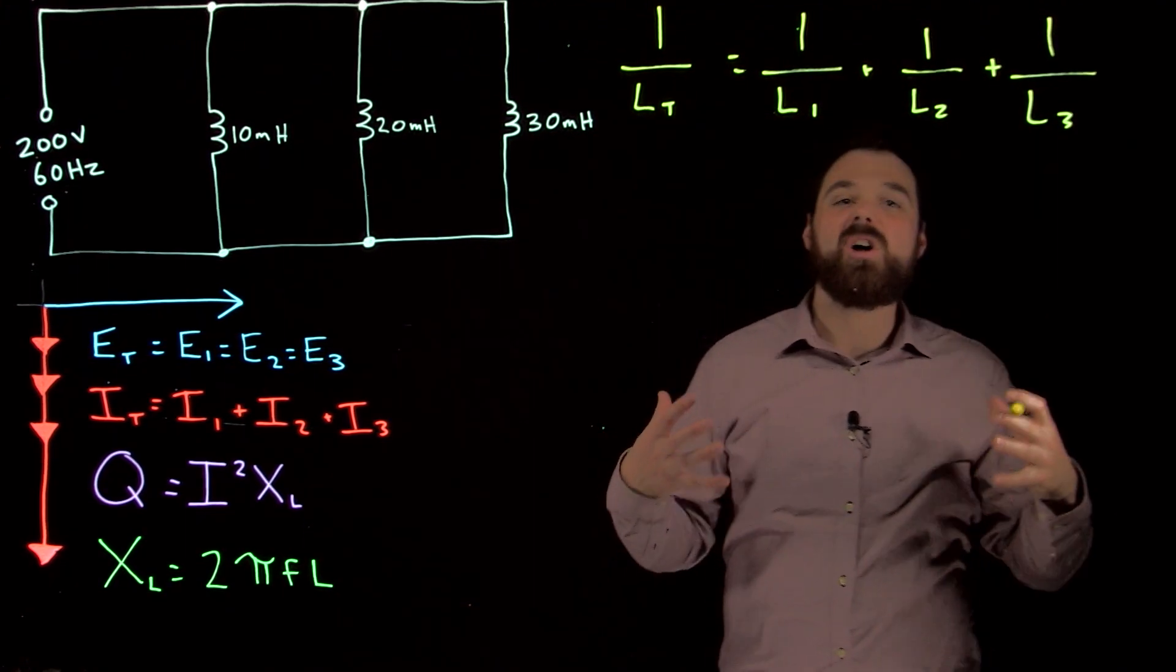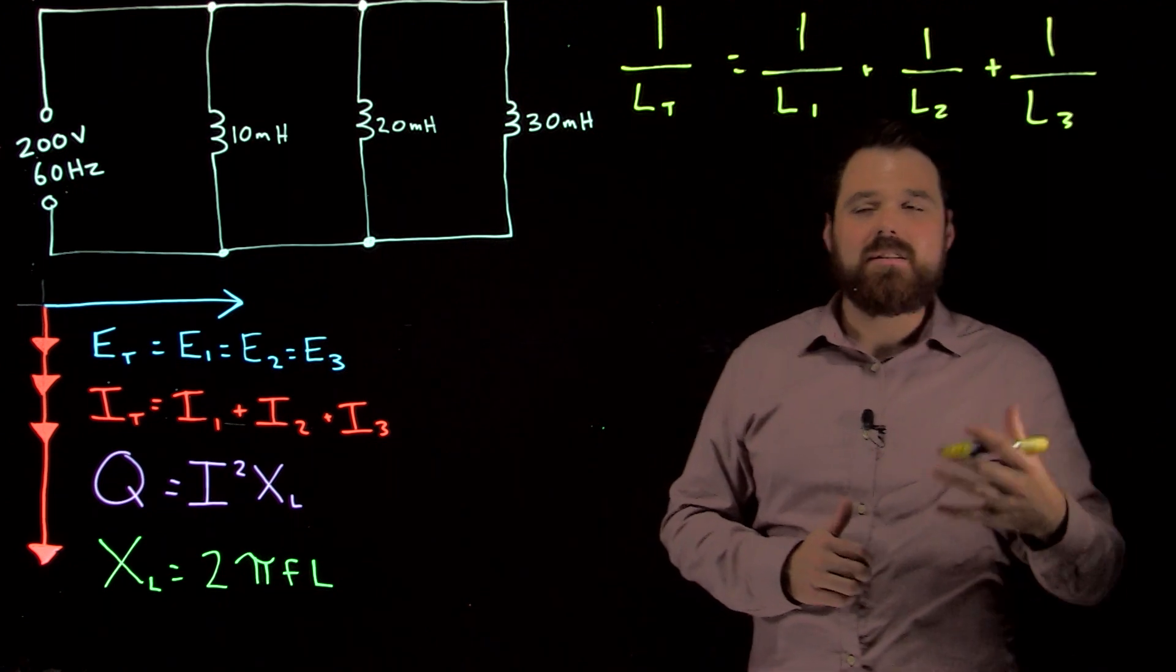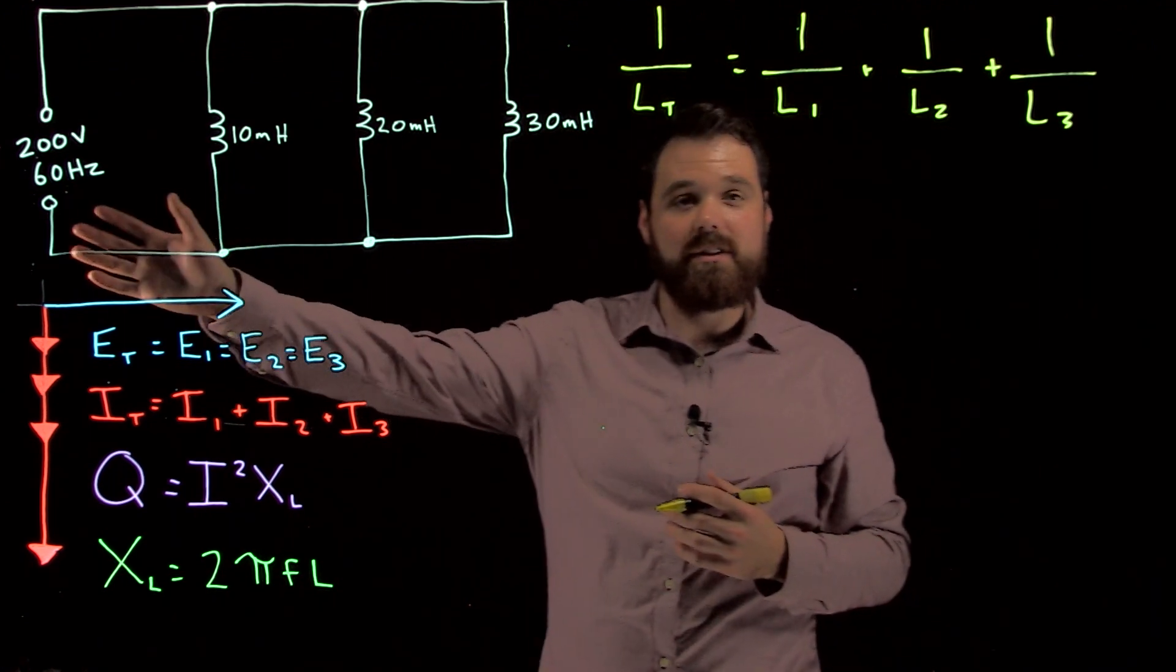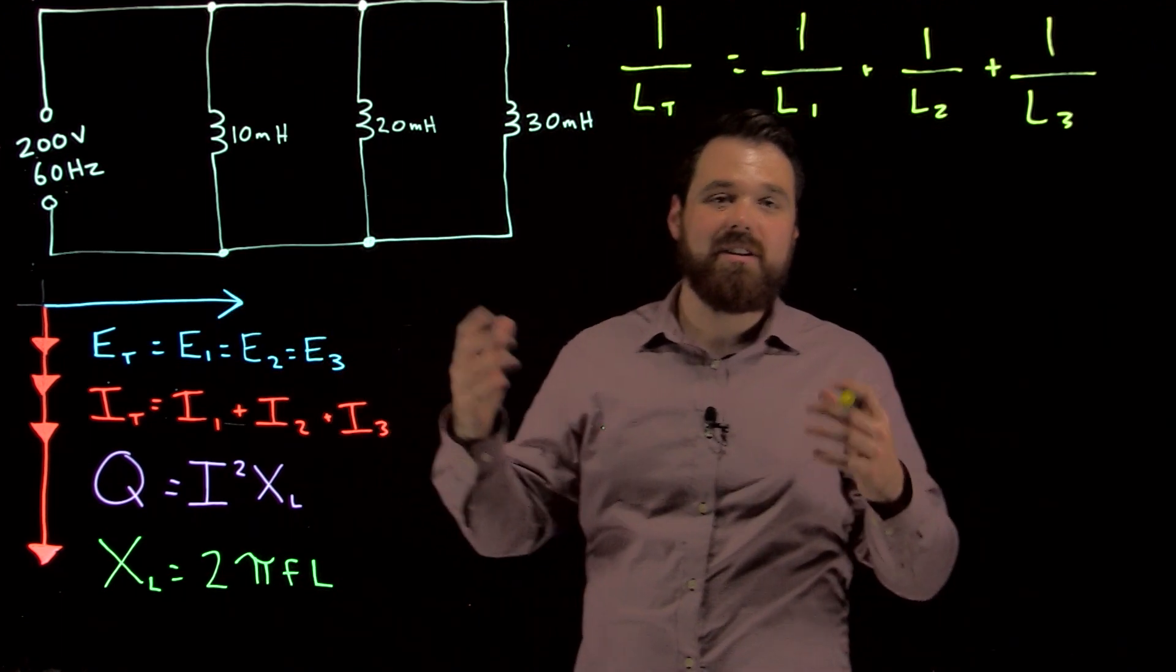We're going to add them up all inversely. At the end, we know that our total inductance is actually going to be smaller than each of those branches.